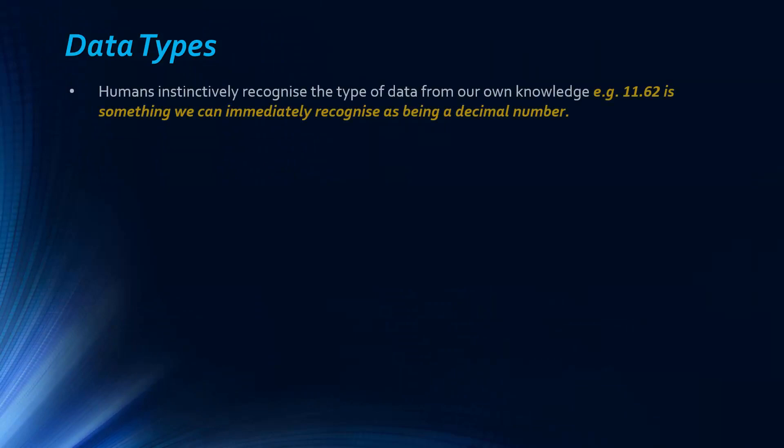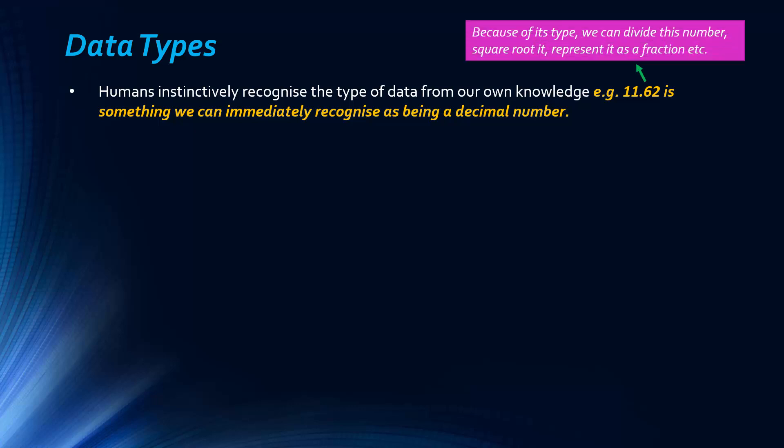We're going to start this video by looking at the concept of the data type. Humans instinctively recognize the type of data from our own knowledge. We know that 11.62 is a decimal number. We've learned that there are certain operations that can be done on this number - we can divide it, square root it, represent it as a fraction. Computers can't do this instinctively, so we need to classify the data and tell the computer when we're using them.